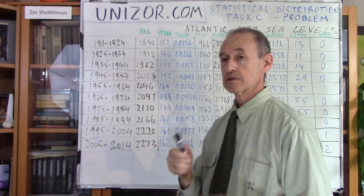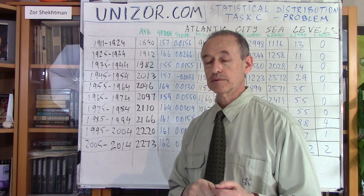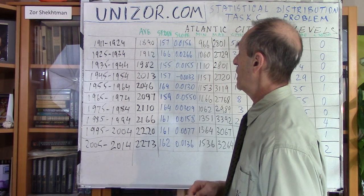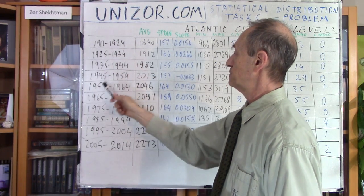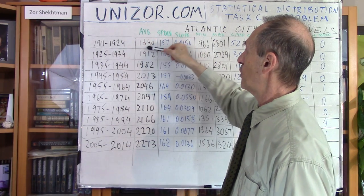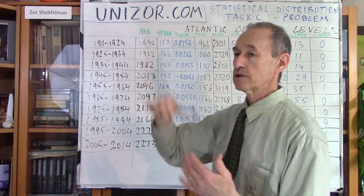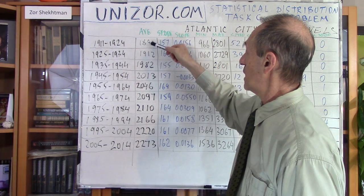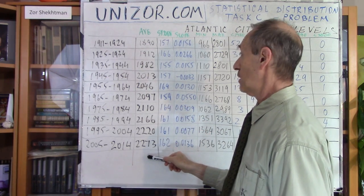By the way, this spreadsheet is also on my website and you can download it — the reference is in the notes for this lecture. The first column is the average for a decade. As you see, the average in the first decade around 1920 was 1890 — in millimeters relative to a certain reference level. And as you see, it's gradually increasing from decade to decade, actually monotonically, which is kind of unusual.